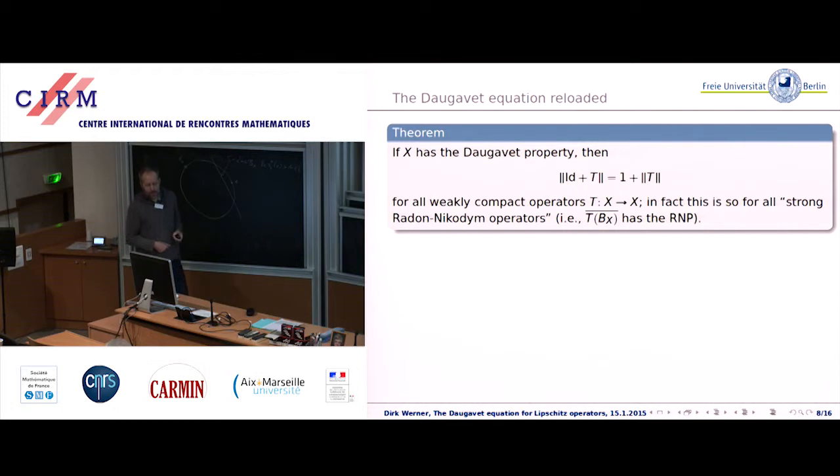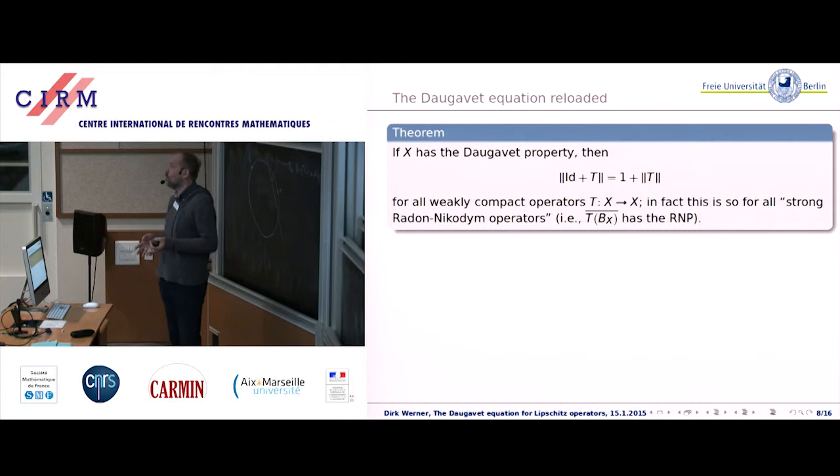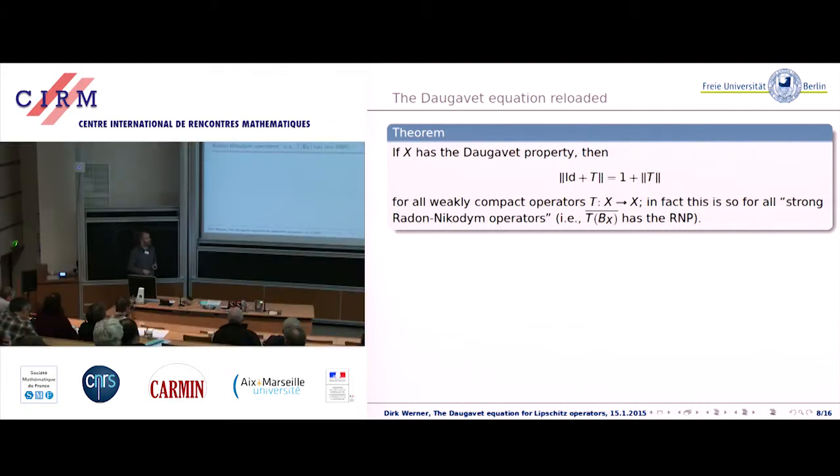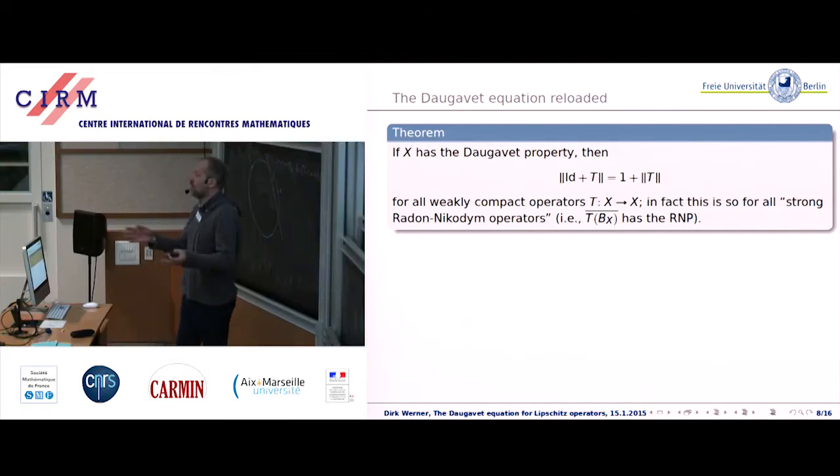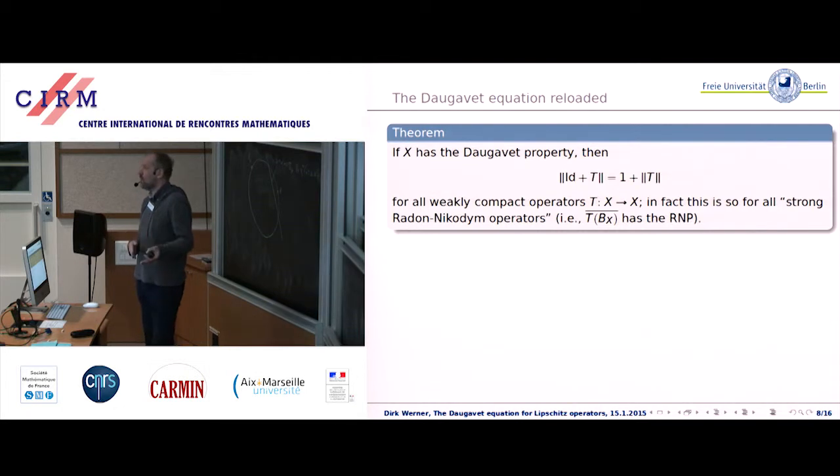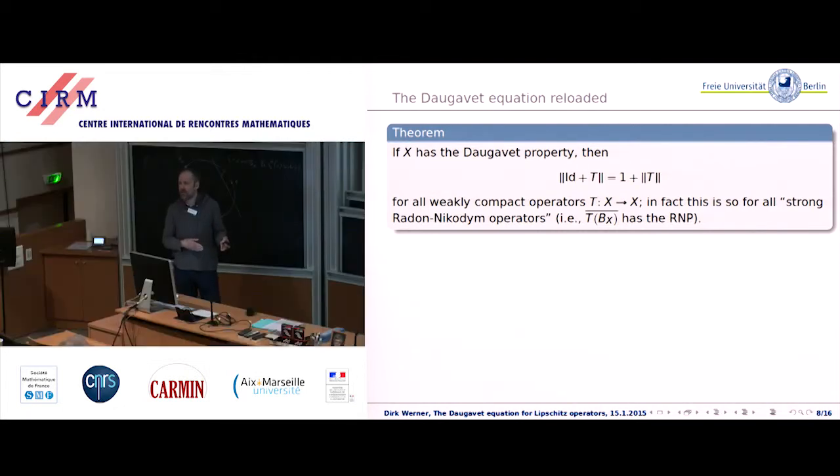Now let's return to the Daugavet equation. By definition, a space has the Daugavet property if this norm equation holds for a very restrictive class of operators, rank one operators. In the examples you saw that actually more interesting operators satisfy this equation and the theorem says this is automatic. If things work fine for one-dimensional operators, then things work fine for weakly compact operators, and the only property that you use is the fact that the image of the unit ball has lots of strongly exposed points. It works as well if the image of the unit ball has the Radon-Nikodym property. This is sort of dual to the fact that a space with the Daugavet property is never reflexive and never has the Radon-Nikodym property.